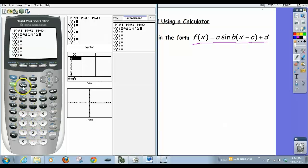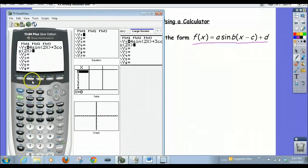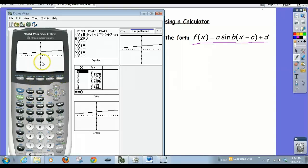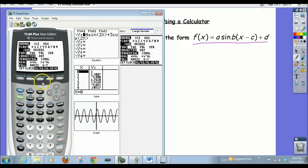4 sine 2x plus 3 cosine 2x. Alright, and now I'm going to hit graph and I do this for a reason. If you notice that you graph a trig function and you just get a straight line, what that means is you are not in radian mode. So you have to be in radian mode whenever you're graphing trig functions like sine and cosine.